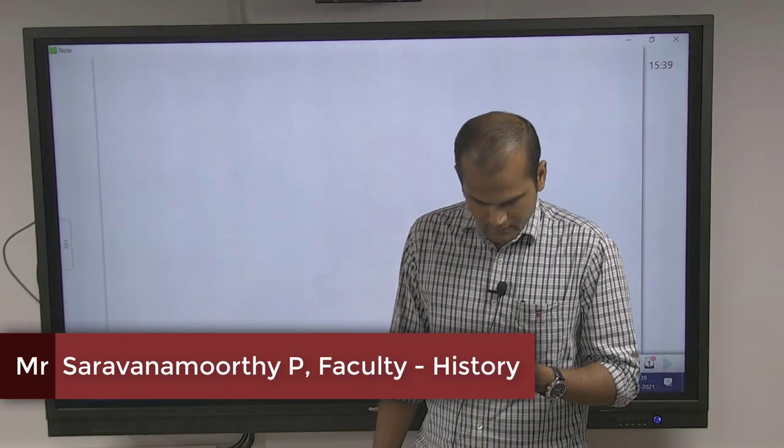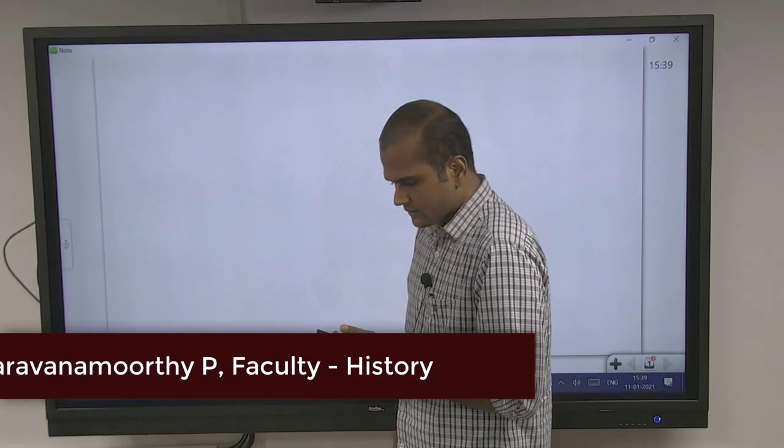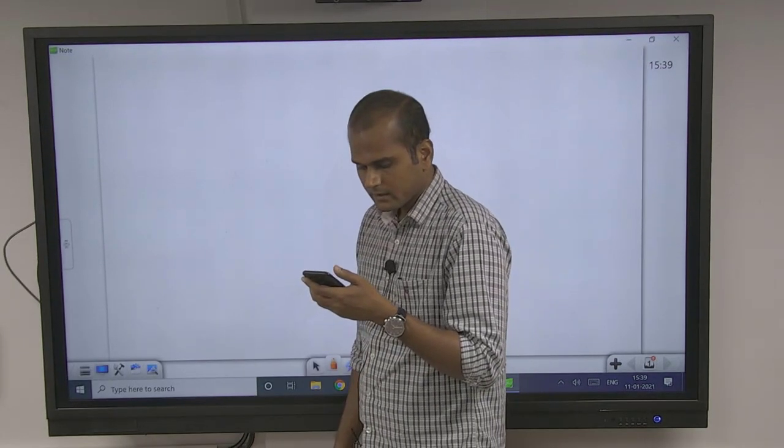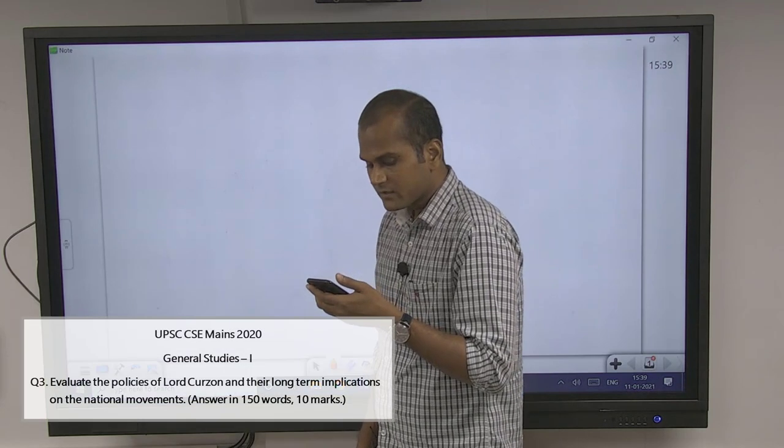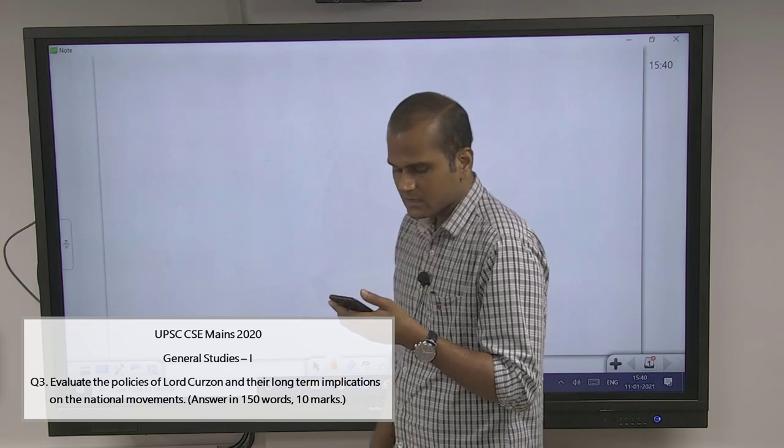In General Studies Paper 2, two questions are from modern Indian history. One is question number 3: Evaluate the policies of Lord Curzon and their long-term implications on the national movement.